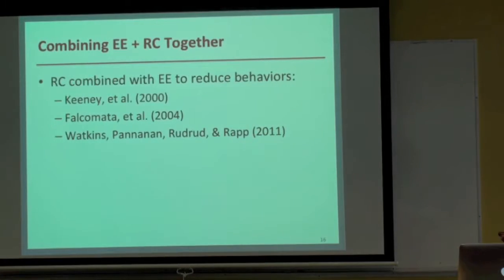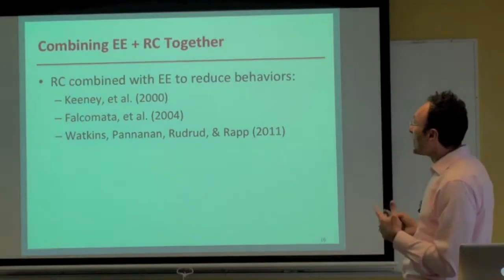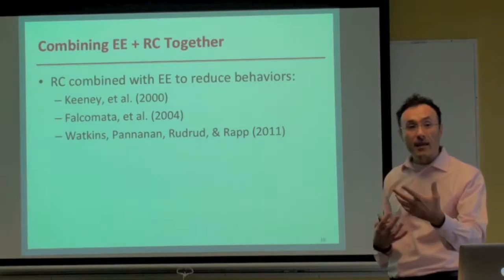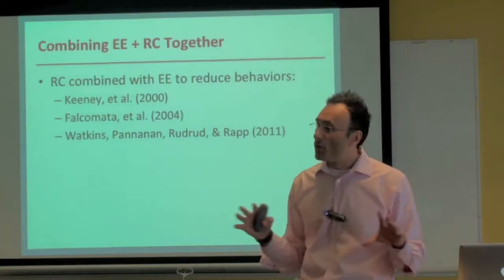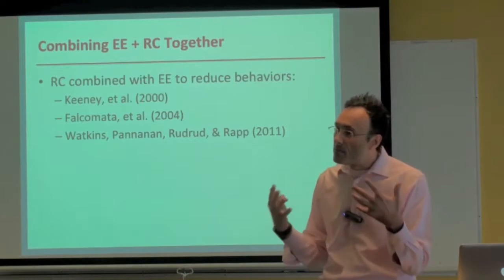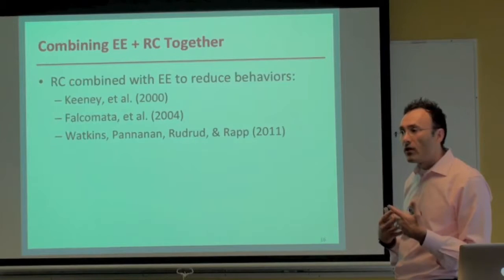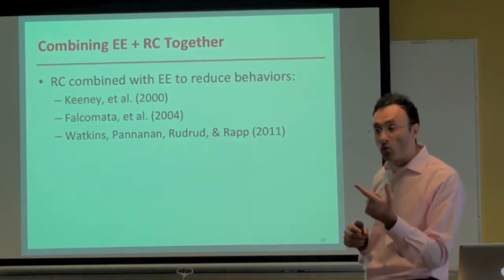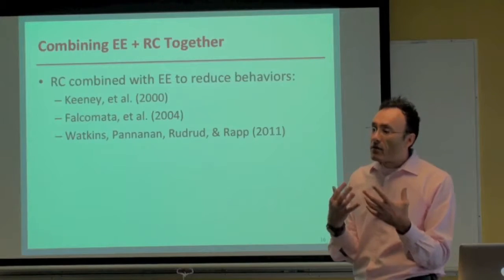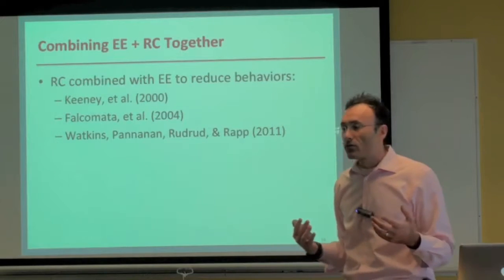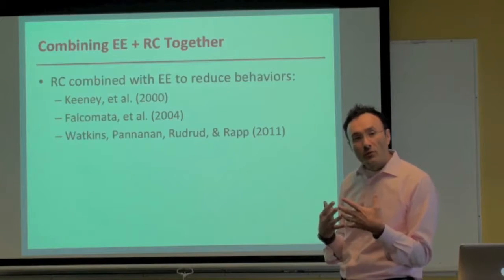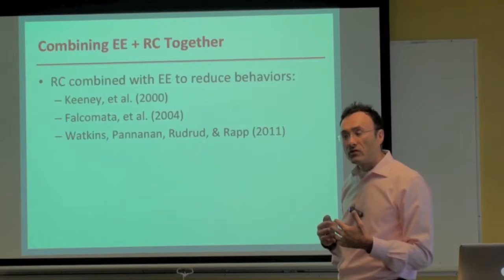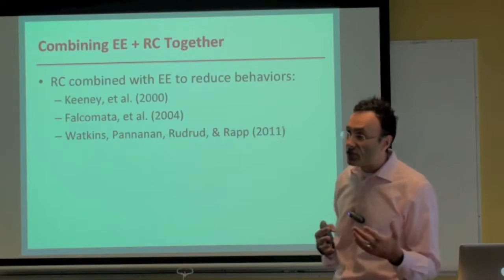Perhaps because of this, Keeney and Falcomata turned to response cost. In the Keeney study, they had a 33-year-old named Shea with severe disruptive and aggressive behaviors maintained by escape and attention. Environmental enrichment alone had no effect. But combined with response cost, problem behaviors reduced to near-zero levels. In the Falcomata replication with an 18-year-old named Derek who emitted vocal stereotypy maintained by automatic reinforcement, environmental enrichment via listening to a Walkman did not decrease stereotypy to any clinically significant extent — but combined with response cost contingent on vocal stereotypy, the behaviors reduced to zero levels.